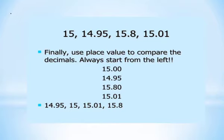Next we have to compare the digits. Use place value to compare the decimals — always start from the left. Looking at the whole numbers: 15, 14, 15, 15 — the smallest whole number is 14, so 14.95 is the first smallest number in this set. For the remaining numbers 15.00, 15.80, 15.01, the whole number is 15, so look at the tenths place: 0, 8, 0. Two numbers have 0 in the tenths place, so look at the hundredths place: 0 and 1.